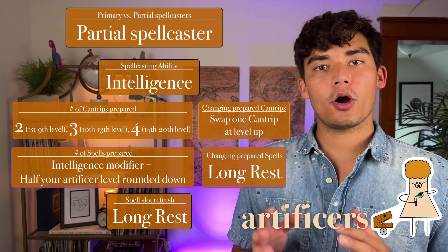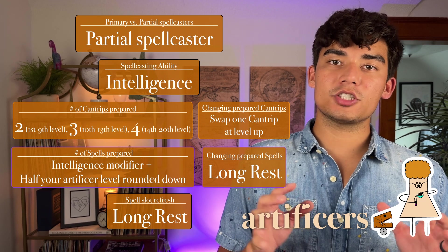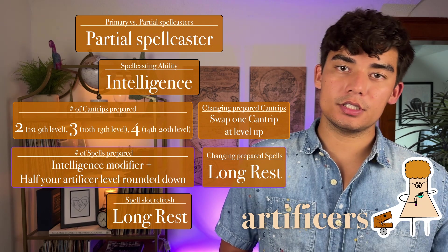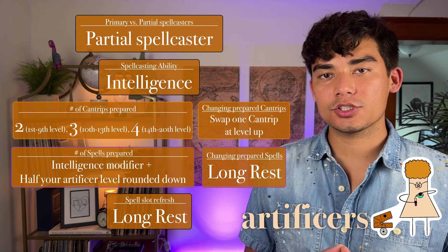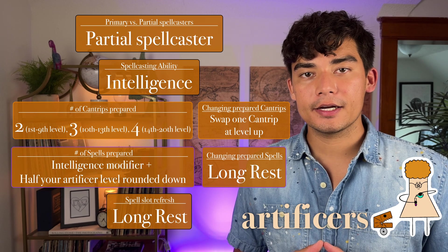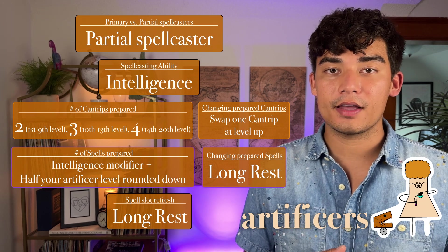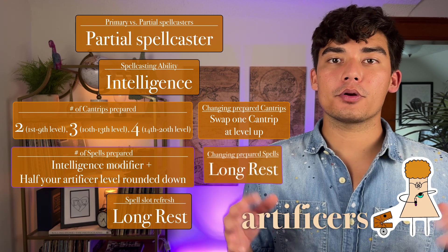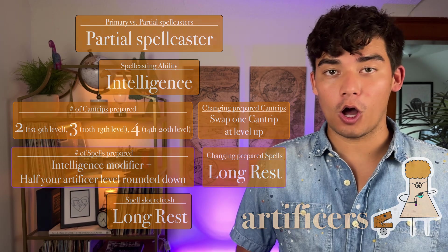Artificers are partial spellcasters, meaning they have access to level 1 through 5 spells. Their spellcasting ability is intelligence. The number of cantrips they can prepare increases from 2 to 4 as they level up, and they can swap one cantrip every time they gain a level. The number of spells they can prepare is their intelligence modifier plus half their Artificer level rounded down. They can change their prepared spells after a long rest, and spell slots refresh after a long rest.